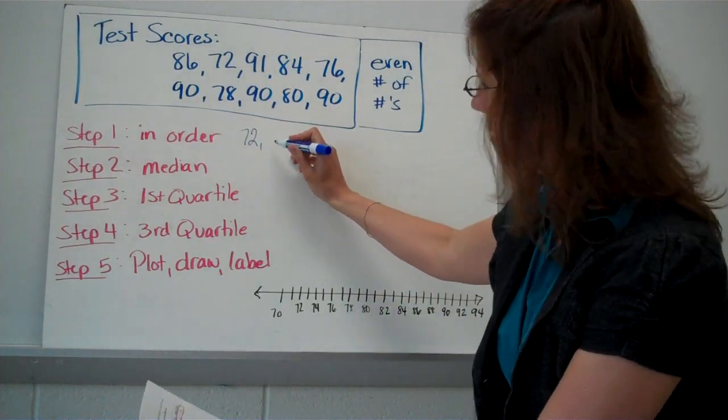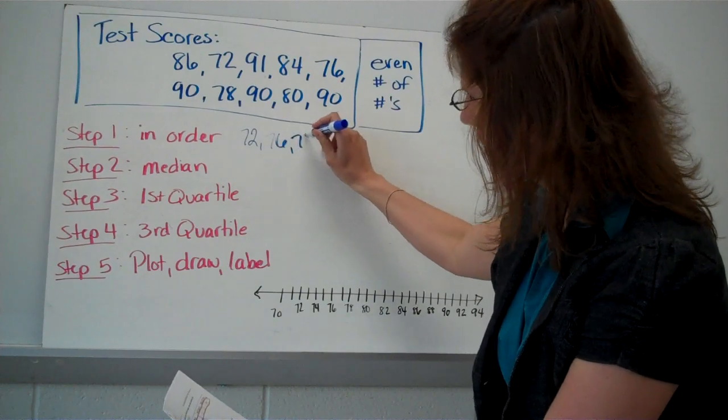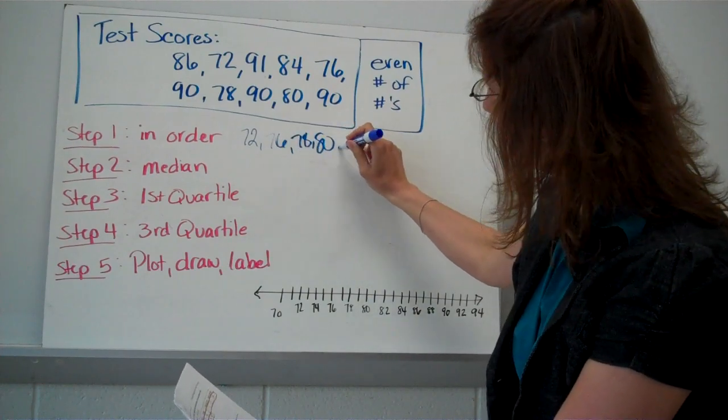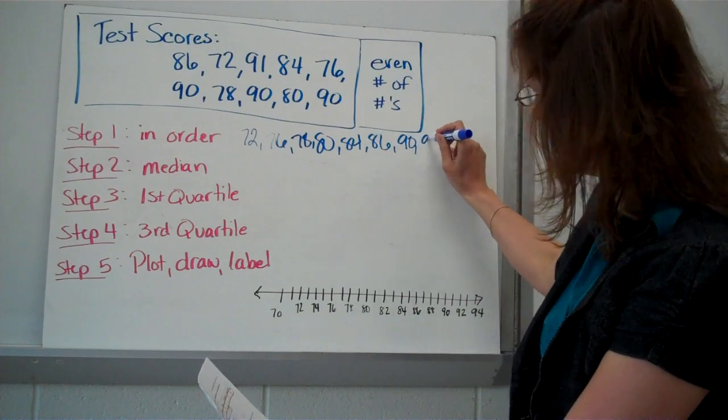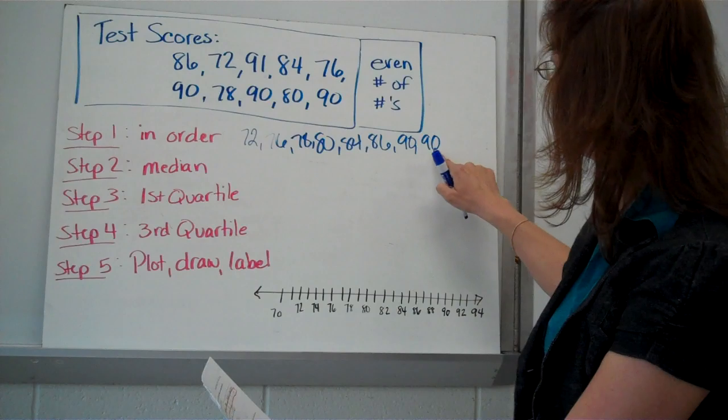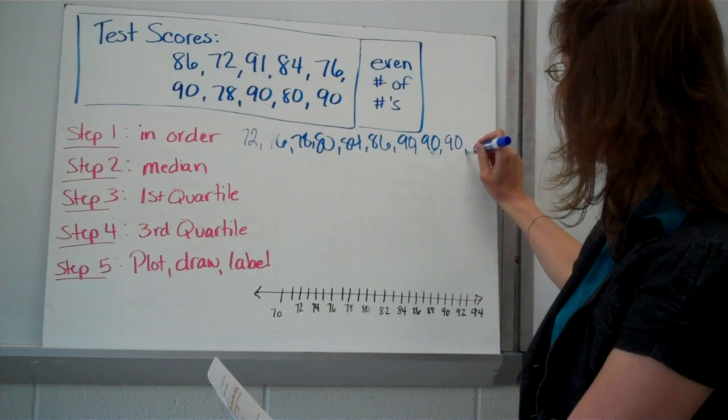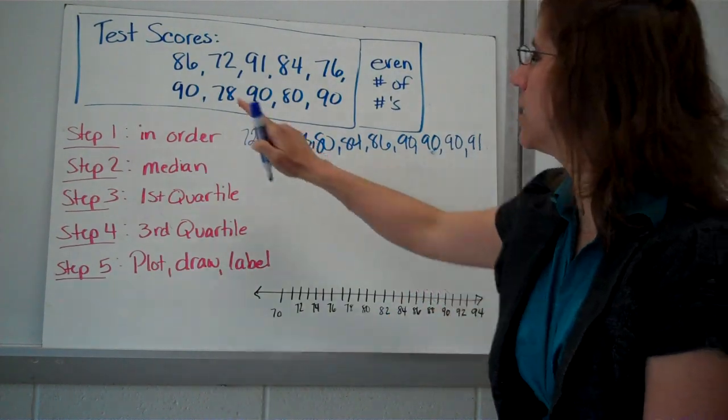We have quite a few numbers here. 72, 76, 78, 80, 84, 86, 90, 90, whoops, 90, and 91. All right. Let's just double check.